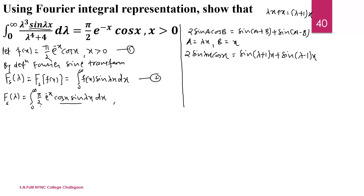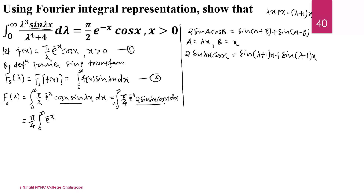To apply this identity we multiply and divide by 2, so the integral becomes (π/4) · integral from 0 to infinity of e^(−x) · 2·sin(λx)·cos(x) dx. Replacing 2·sin(λx)·cos(x) with sin((λ+1)x) + sin((λ−1)x), we write (π/4) · integral from 0 to infinity of e^(−x) · [sin((λ+1)x) + sin((λ−1)x)] dx.